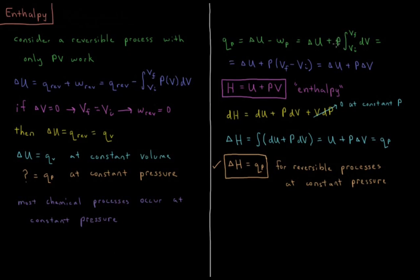We have minus minus integral there. That becomes a positive. So we get delta U plus P integral from V_initial to V_final dV. This is delta U plus P times V_final minus V_initial. The volume is a state function, so the integral from the initial to final volume is just the final volume minus the initial volume. Or we have delta U plus P delta V is our heat that occurs during some constant pressure process.